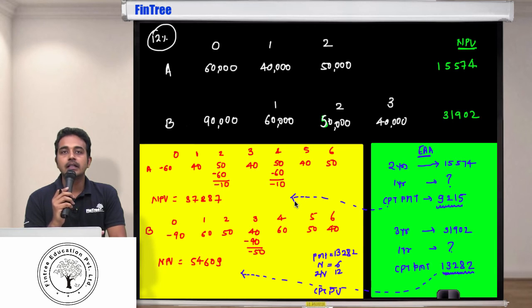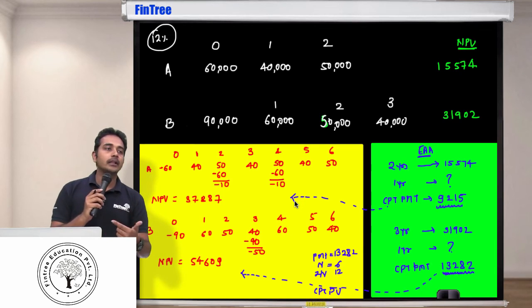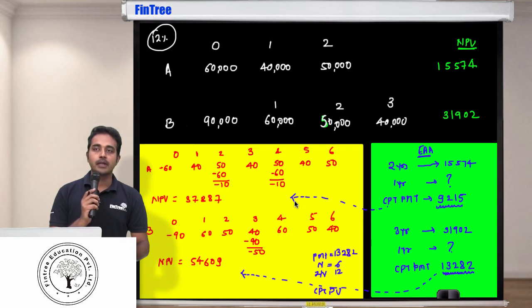9,215 would be your payment. 6 would be your N because now you are doing this activity for six years. 12 would be your I/Y, compute present value. Is the number magic?